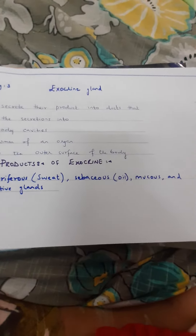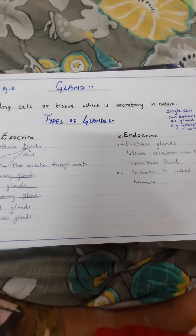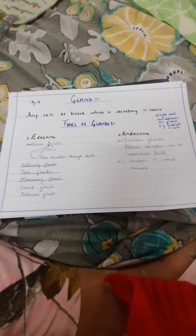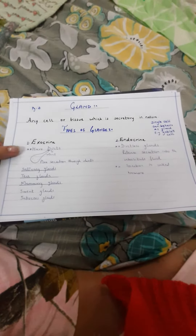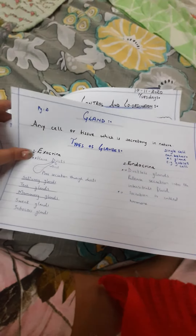After the exocrine glands, we have the endocrine glands. The endocrine glands are glands in which secretions are released directly into the blood.